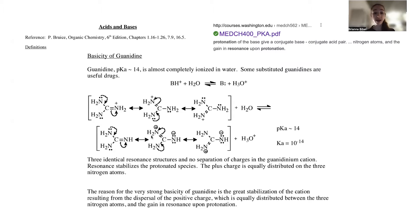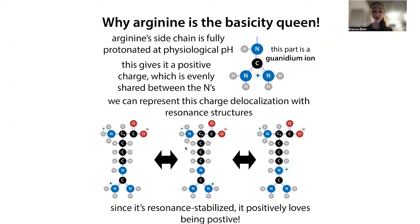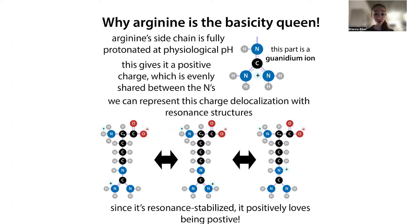In the deprotonated form, you don't have this resonance stabilization that you get when you have the protonated form. Since molecules really like having resonance stabilization, they're really going to want to be in this protonated form, and they're not going to want you to take off a proton and ruin that resonance. So it's going to be really hard to deprotonate arginine. If it's really hard to deprotonate something, this means you're going to have to get to a really high pH in order to deprotonate it, so this means you're going to have a very high pKa.